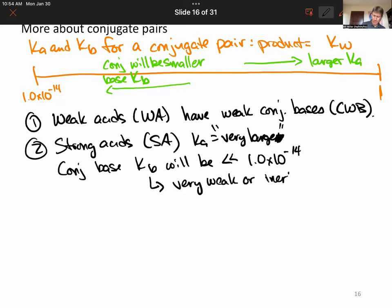Or inert. And this will always be true. So weak acids have weak conjugate bases. Strong acids have very weak or inert conjugate bases. Strong bases will have very weak or inert conjugate weak acids. So it's like the larger one is, the smaller the other is.